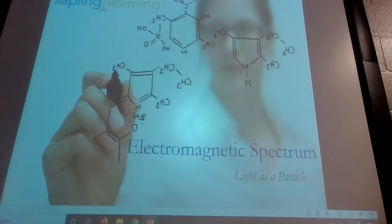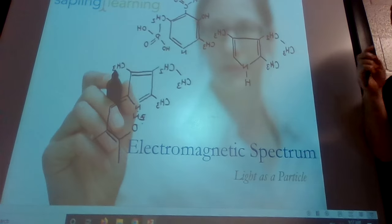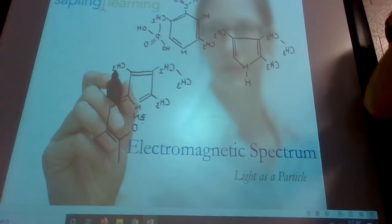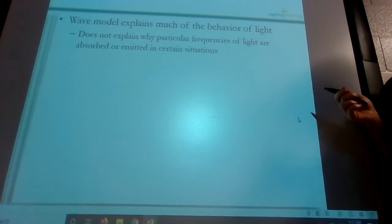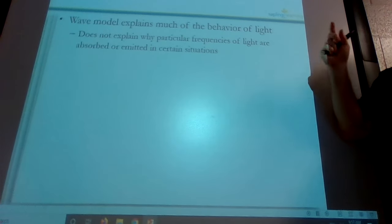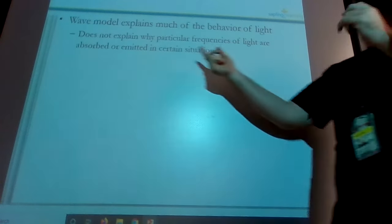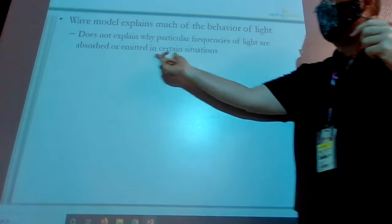So the light coming out of this LED setup right here has characteristics as a wave, but also it comes out as little individual particles. And it actually took us quite a while to figure this out. The wave model explains a lot of the behavior of light, but it doesn't explain everything. Particularly, it doesn't explain why particular frequencies of light are absorbed or emitted in certain situations.